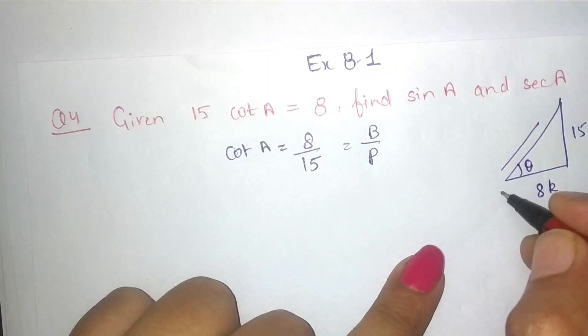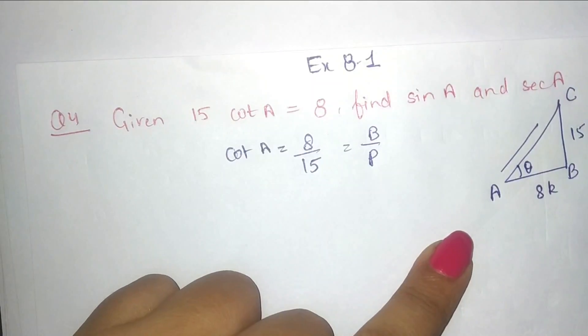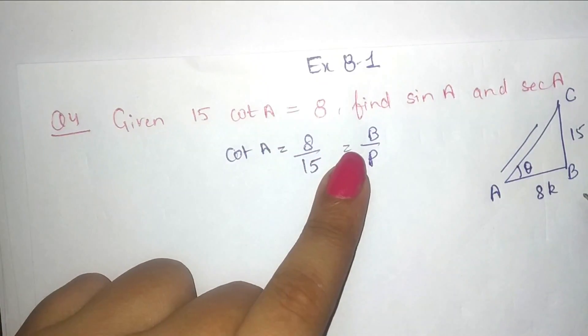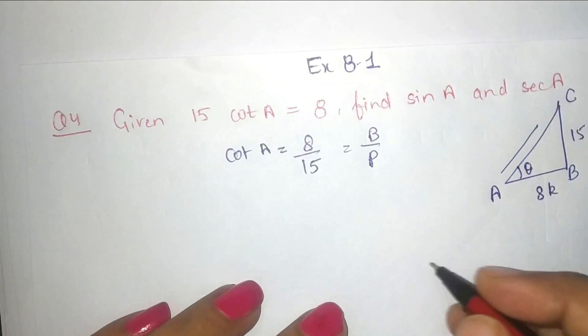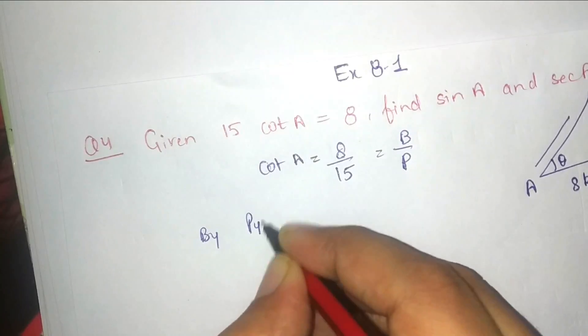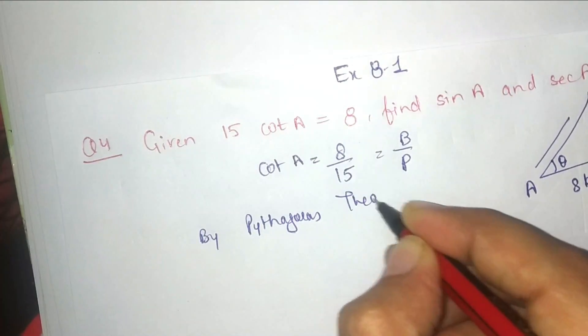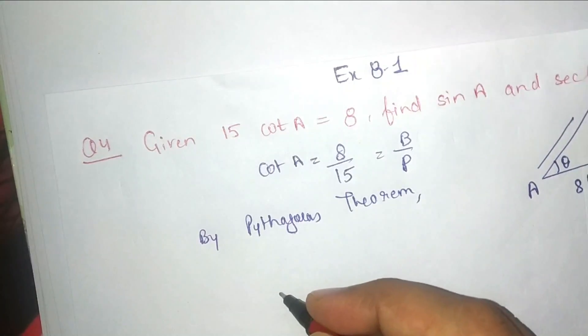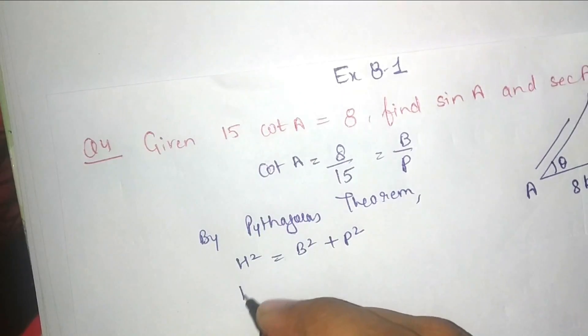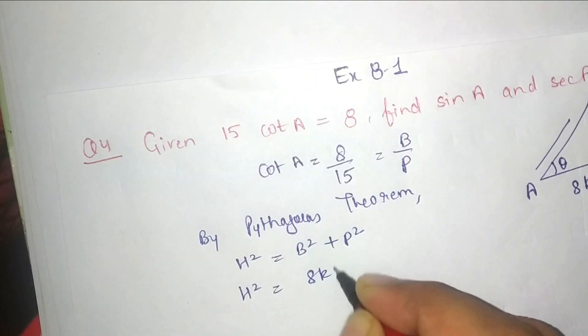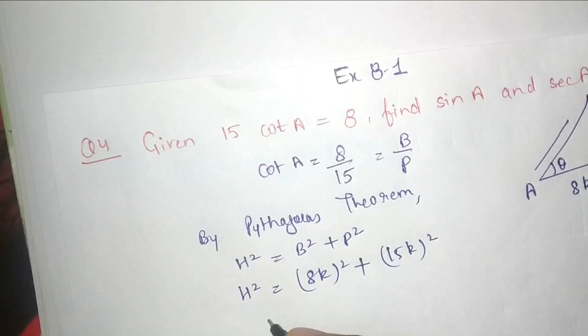Let's start naming this triangle. This is A, so theta will be A and B and C. Because this is not right angle, we have given right angle B and C. By applying Pythagoras theorem, H square is equal to B square plus P square. H we need to find, base is 8k and perpendicular is 15k square.